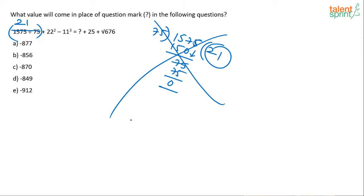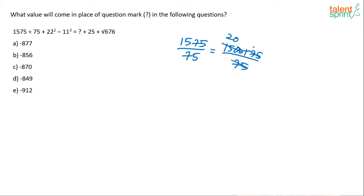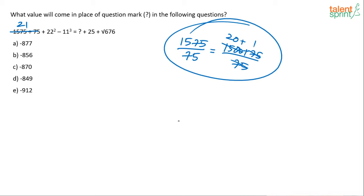For the next simplification: 1575÷75 + 22² - 11³ = ? + 25 + √676. We know 1575÷75=21, 22²=484, 11³=1331, √676=26, and 25+26=51. So: 21+484-1331 = ? + 51, which gives ? = 21+484-1331-51. Group: 484+21=505. Then 505-1331-51. Since the answer is negative, 1331+51=1382, and 1382-505=877. So the answer is -877, option A.